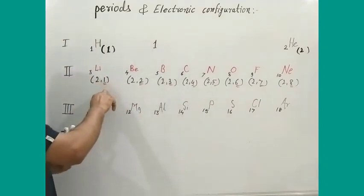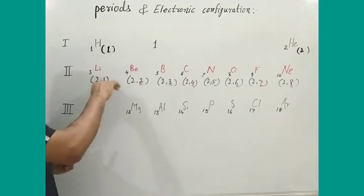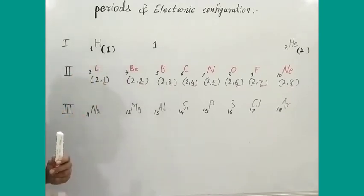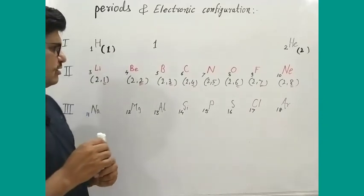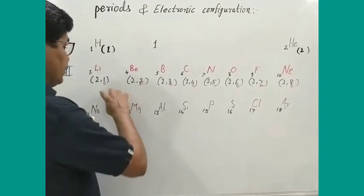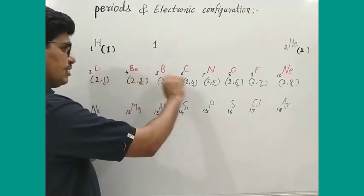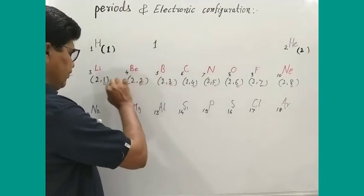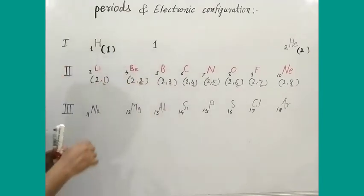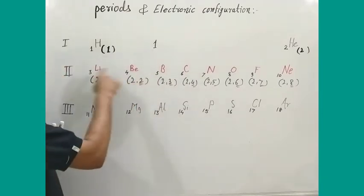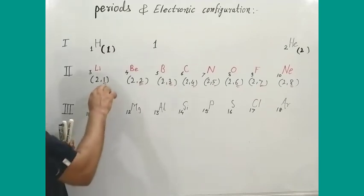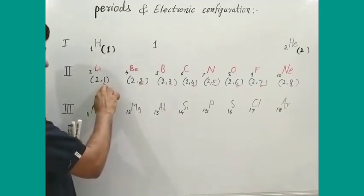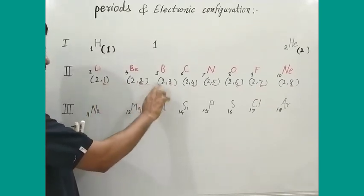The number of shells is the same for elements in the same period. Which group an element belongs to depends on how many valence electrons it contains. The number of valence electrons increases by one from left to right.